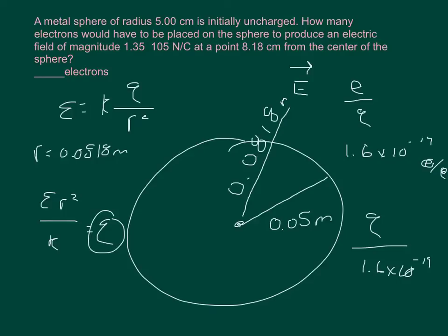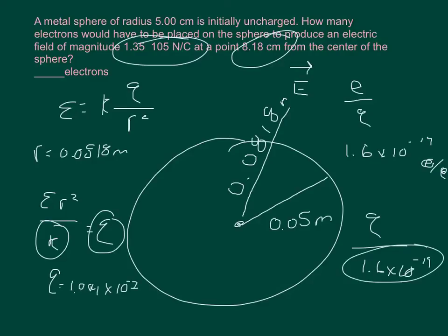Now the problem gives us basically everything else we need. So the electric field magnitude 1.35 times 10 to the fifth, we're going to multiply that by 0.0818 squared, and then divide it by 8.99 times 10 to the ninth. You should get that Q equals 1.004 times 10 to the negative seventh. And then when you divide that by 1.6 times 10 to the negative 19th you should get that the number of electrons equals 6.28 times 10 to the positive 11th.